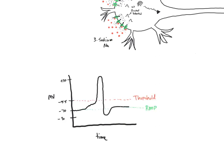Recall that minus 55 is our threshold limit. So how do we get from minus 70 to minus 55? What's occurring is we are summating these graded potentials — we'll highlight that with a yellow marker. The next step is to look at what happens at the axon hillock and the axon when those graded potentials summate to reach minus 55 millivolts.